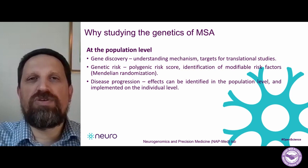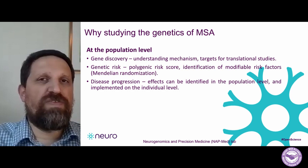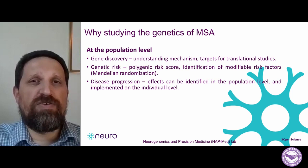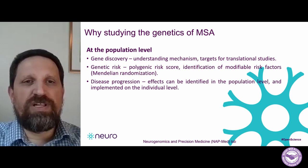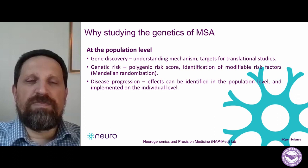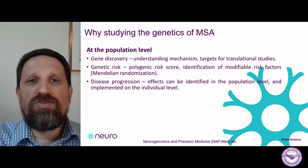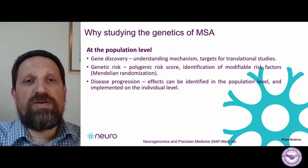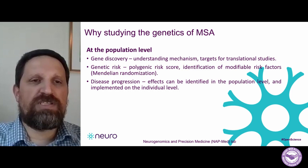Another thing that geneticists typically do is look at how genetics affect disease progression. As you know, some people progress very fast, some much slower, and there are different types and subtypes of MSA that progress differently. What we're trying to do is see how genetics affect the risk to have different types and how they progress. We can only do that on the population level, but what we find we can later implement on the individual level.